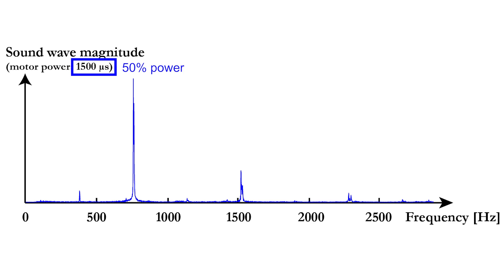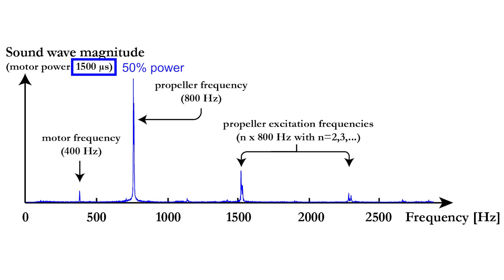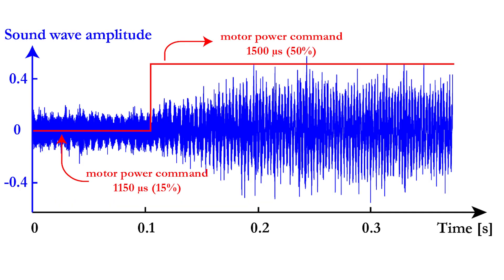Let's take a second fast Fourier transform at 50% motor power. You see that the spectrum is shifted, with a motor frequency that has risen from 280 Hz to 400 Hz, and a propeller frequency of 800 Hz. In the higher frequency ranges, you find once again the propeller excitation frequencies.